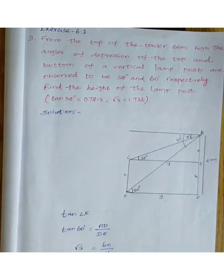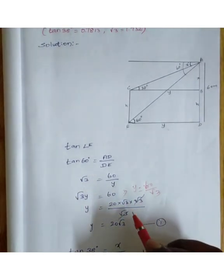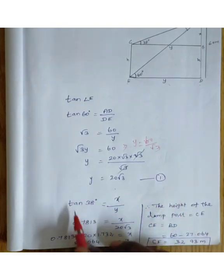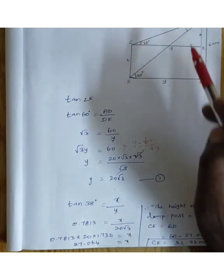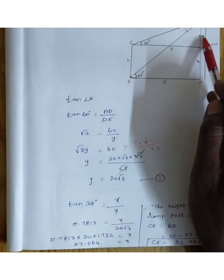Using tan 60 degrees equals root 3, we get root 3 equals y divided by 20 root 3. Simplifying, root 3 cancels, leaving 20 root 3 equals y. Now for tan 38 degrees, from the triangle we get tan 38 equals x divided by the opposite side.